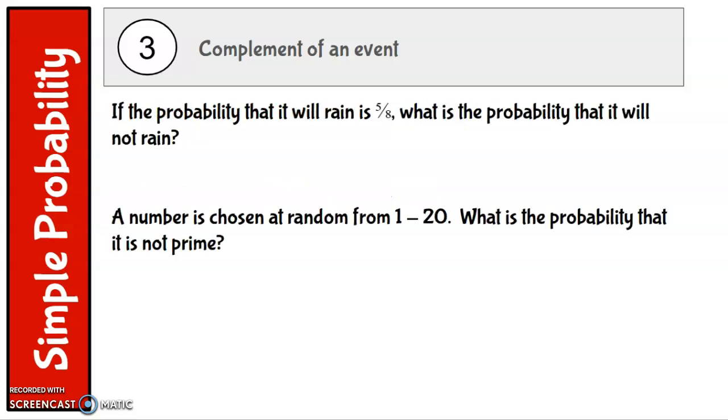So let's get some examples. If the probability that it will rain is 5 eighths, what is the probability that it will not rain? So if there's 5 out of 8 days that it will rain, then there are 3 out of 8 days that it will not rain. So 3 is what we'll add to the 5 to get 8. So that is the probability that it will not rain.